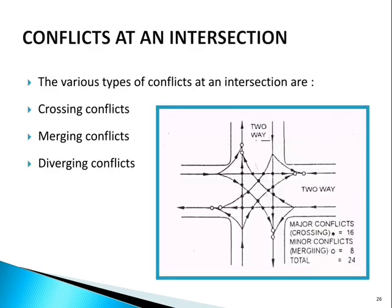The various types of conflict at an intersection are crossing conflicts, merging conflicts, and diverging conflicts. In the diagram, major conflicts are denoted by black circles and minor conflicts by white circles. The total conflicts at a standard four-legged intersection are 24.